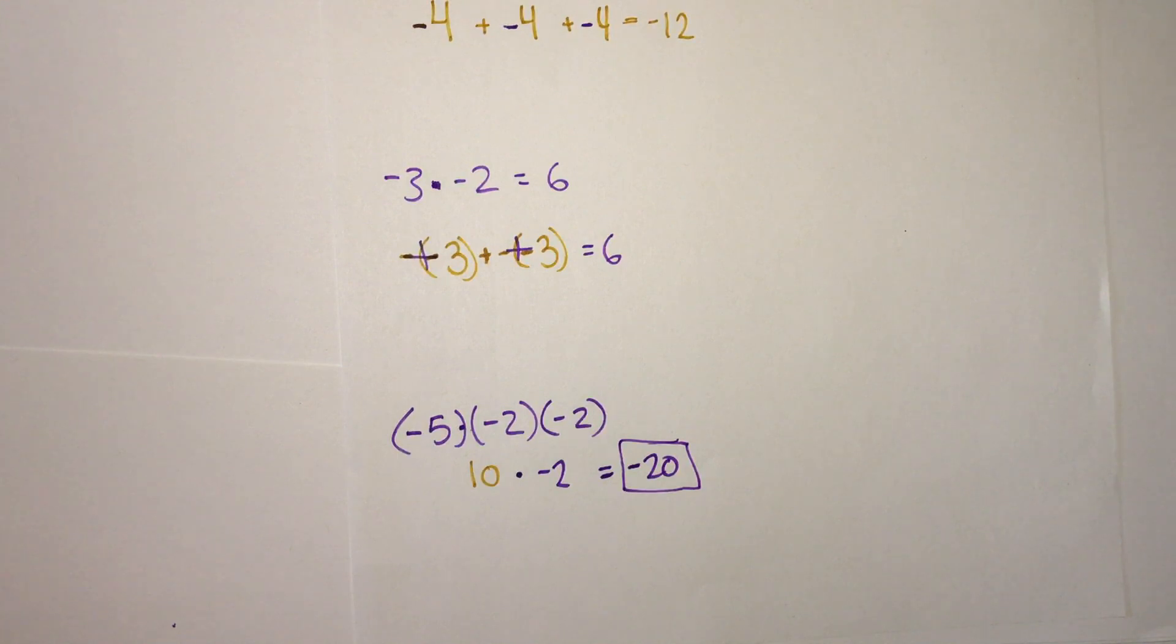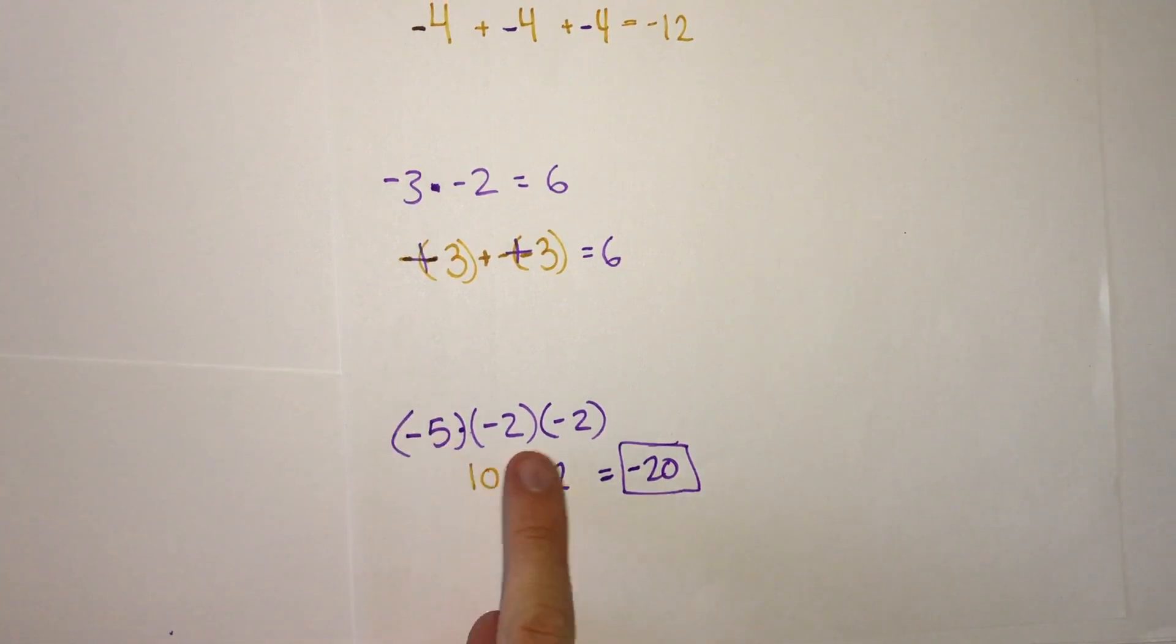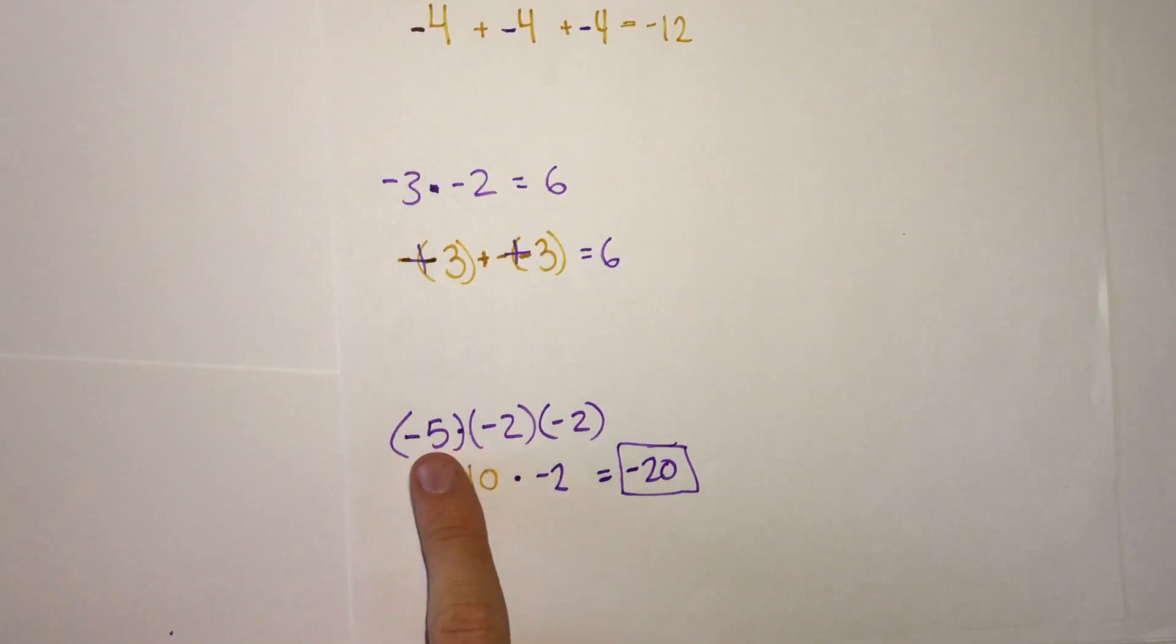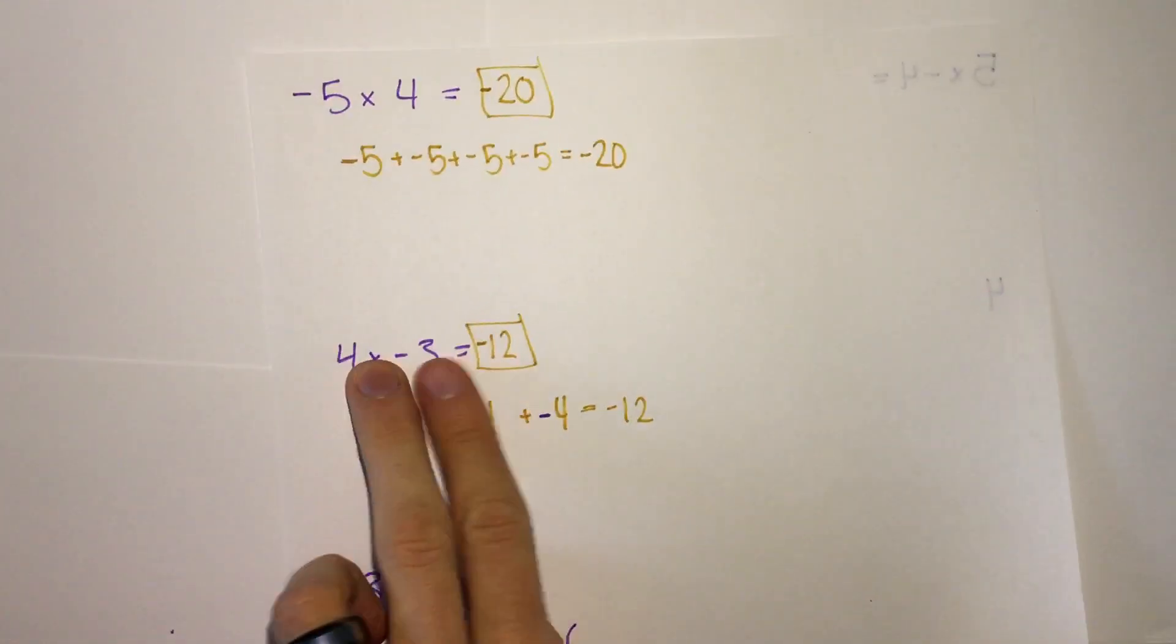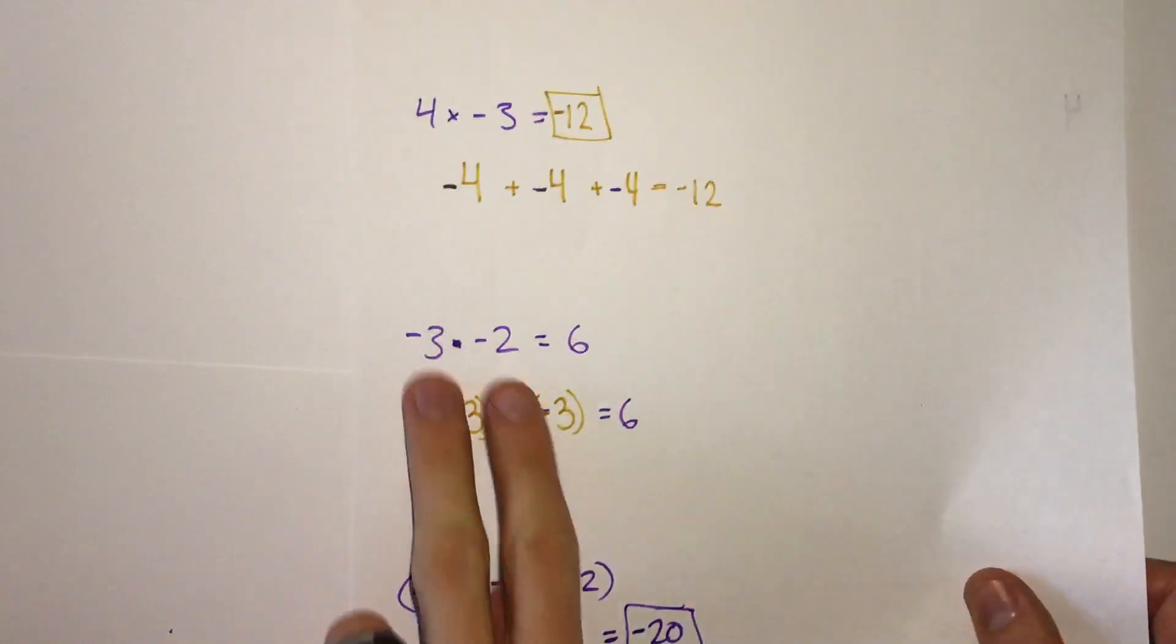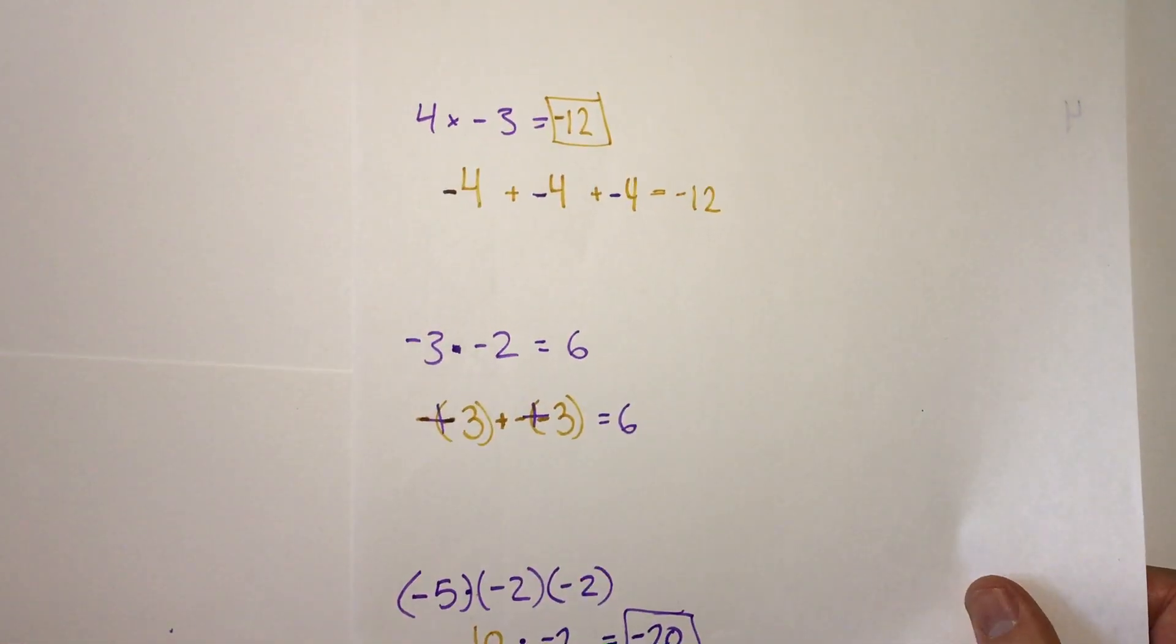When you do these, remember to multiply the numbers and then look at the signs and figure out, do the signs make the answer negative, or do the negatives cancel and make it positive?